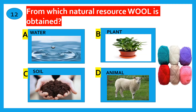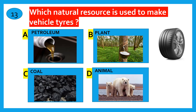Which natural source is used to make vehicle tyres? Water, plant, soil, animal. The correct answer is plant.